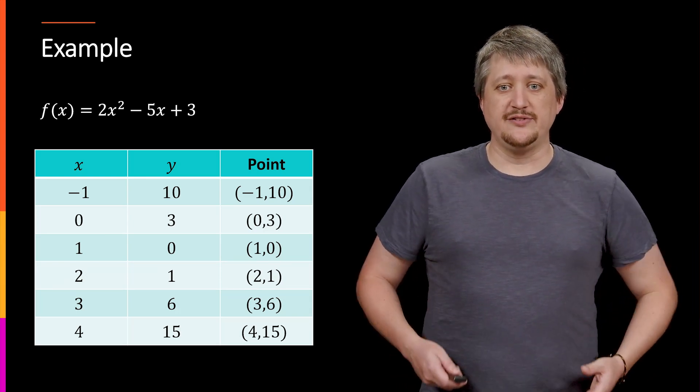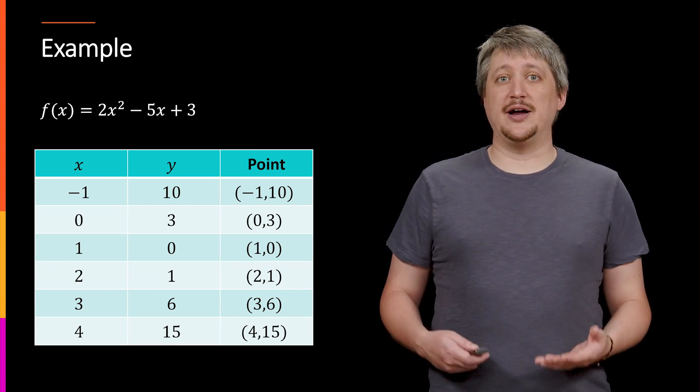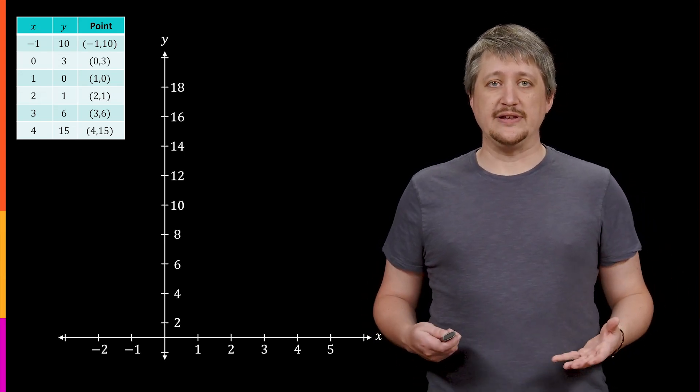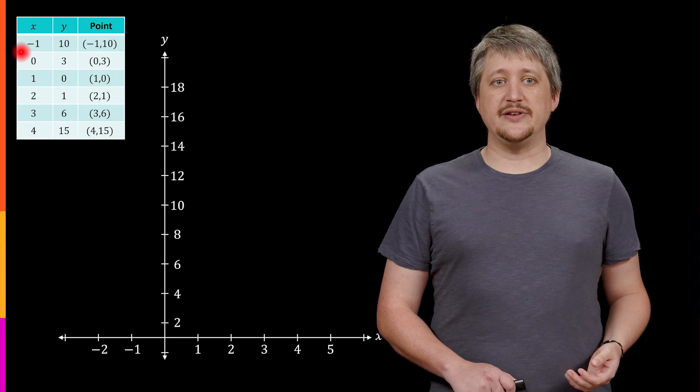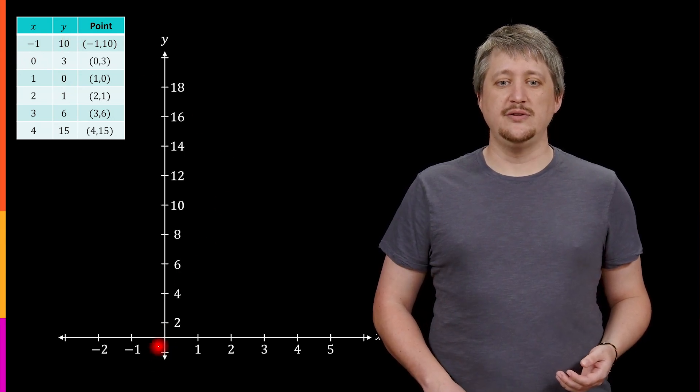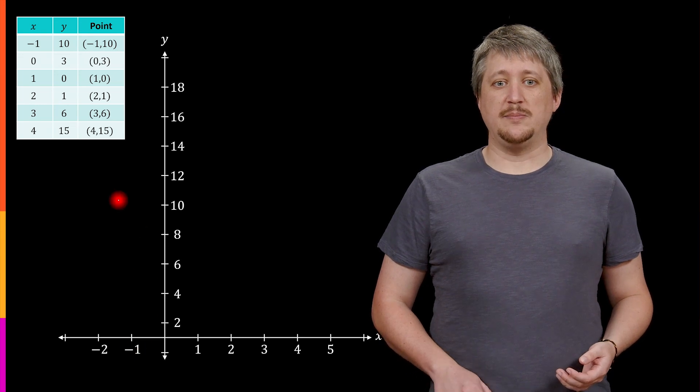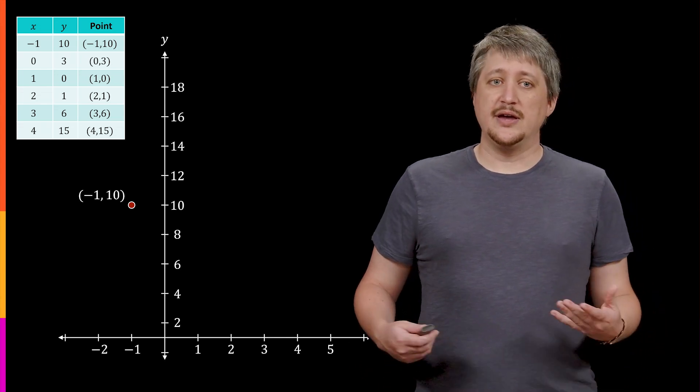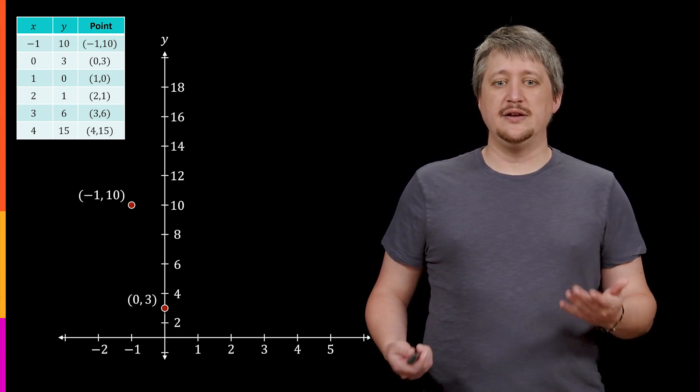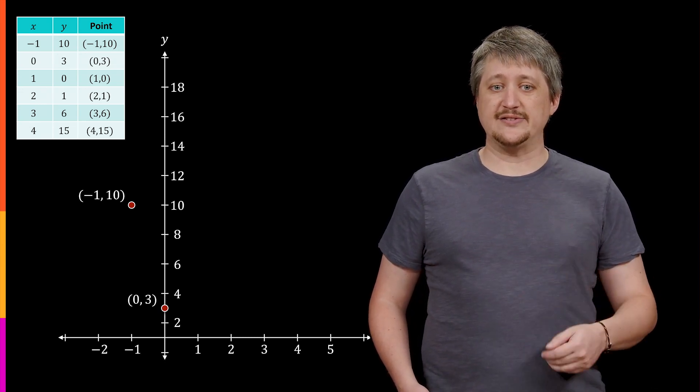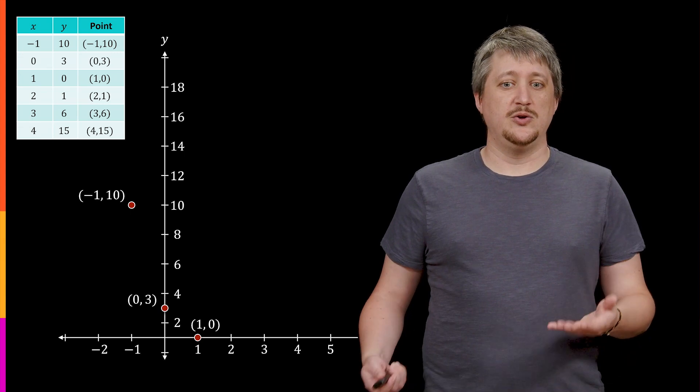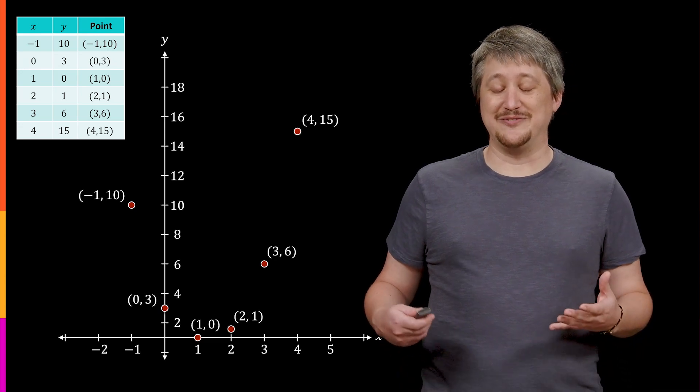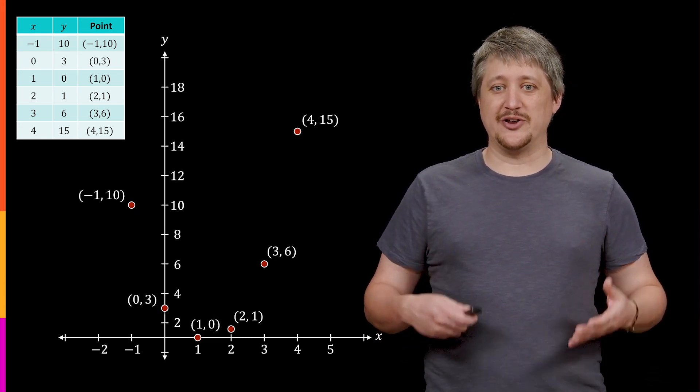So now we have a scattering of points. Now we need to figure out what this thing looks like by putting them on a graph. So we draw our X, Y axis. Grab our table of points and start putting these things down. So when we have, for example, the negative 1 comma 10, that means that our X value is negative 1. So we go to the negative 1 X value. And then we go up to 10 for the Y value. And that's where the point goes. Negative 1 comma 10. And we keep going. So we have the point 0 comma 3. That's at the X value 0. So it's on the Y axis. Up 3. We get 0 comma 3. 1 comma 0. 2 comma 1. 3 comma 6. 4 comma 16. 4 comma 15. So we place these things that we got from our table on here.